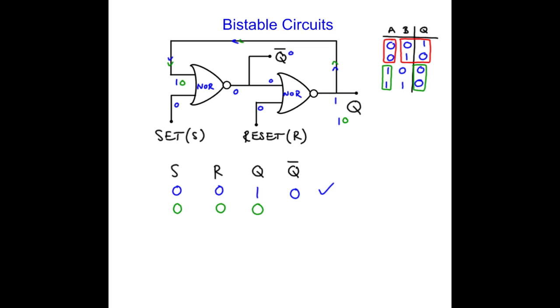So we get a 0 here. Remember set is still 0. So q bar now becomes 1. Okay. 1 and 0 into my NOR gate give me a 0 output. So that also works. So set and reset being 0 can allow q to be 1 or 0. Both states work.